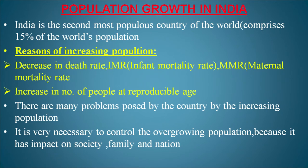India is the second most populous country in the world, comprising 15 percent of the world's population. The reasons behind increasing population include a decrease in death rate, infant mortality rate (IMR), maternal mortality rate (MMR), and an increase in the number of people at reproductive age. The growing population poses many problems for society, family, and the nation, making it necessary to control overpopulation.